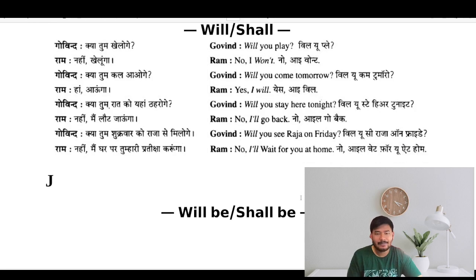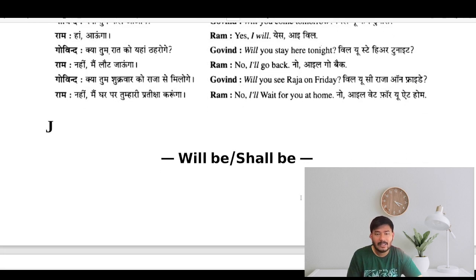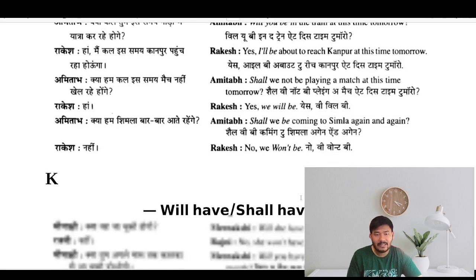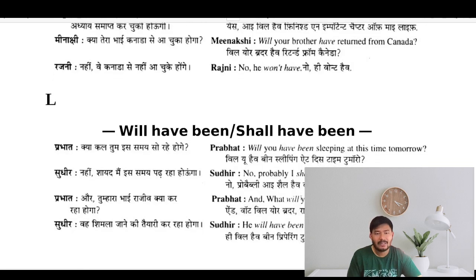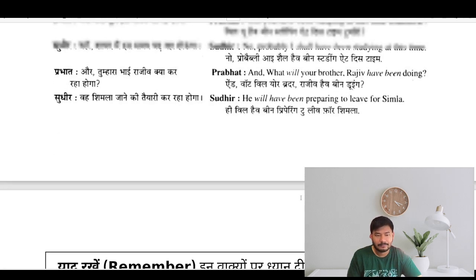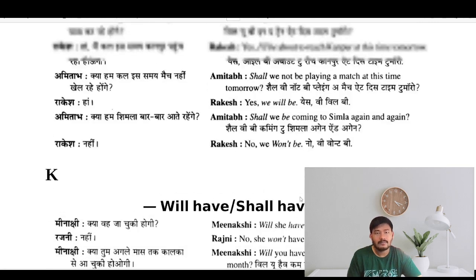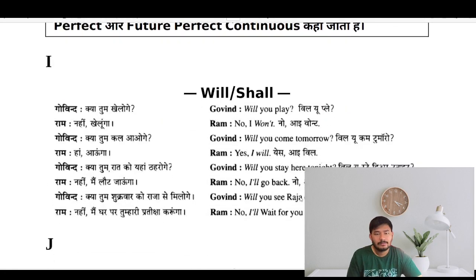Use of will and shall. So for example: Kya tum khelloge — will you play? Kya tum kal aoge — will you come tomorrow?